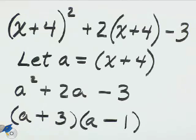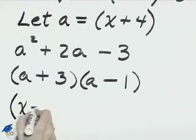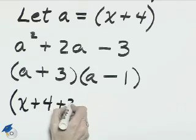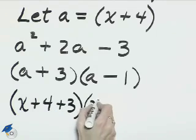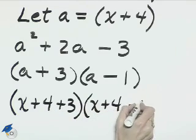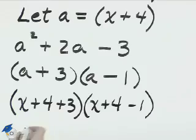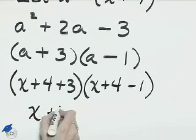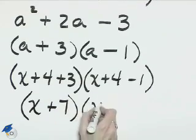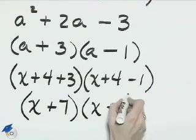Since this is factored here, we need to just re-substitute the a for x plus 4. We'll have x plus 4 plus 3 and x plus 4 minus 1. x plus 7 for the first factor, x plus 3 for the second.